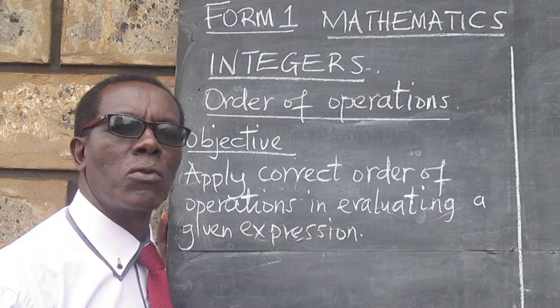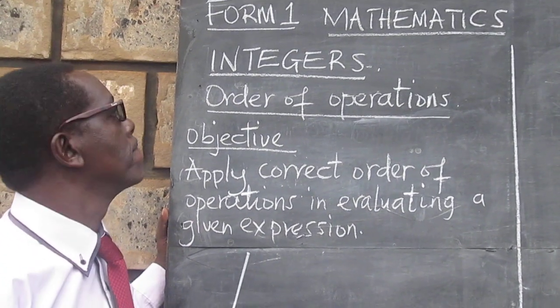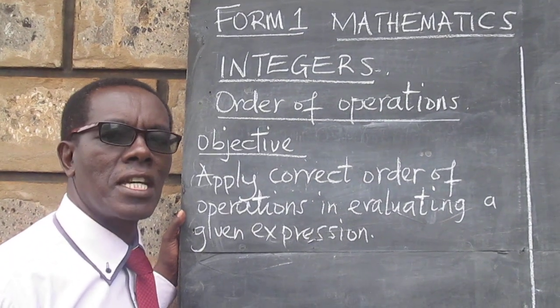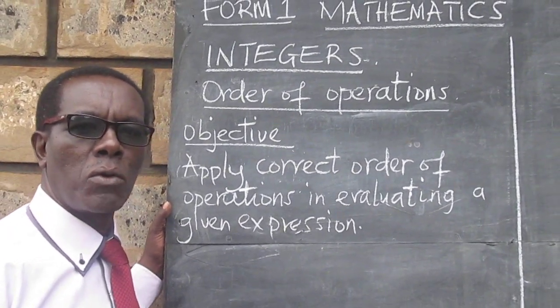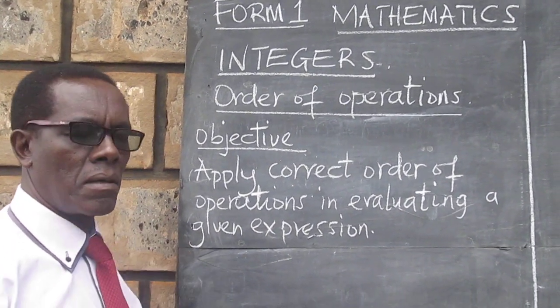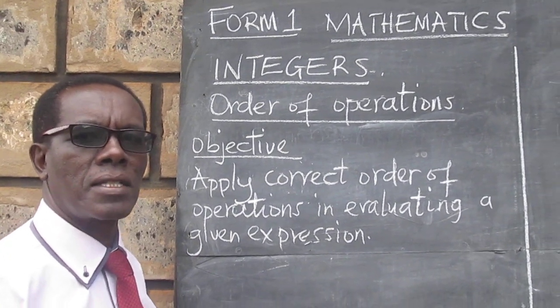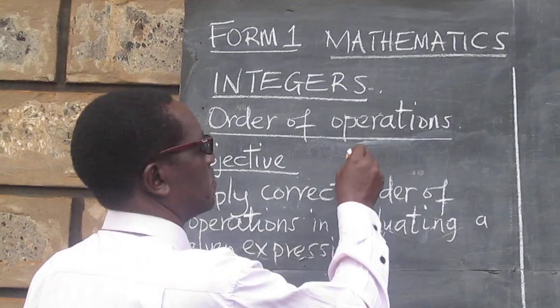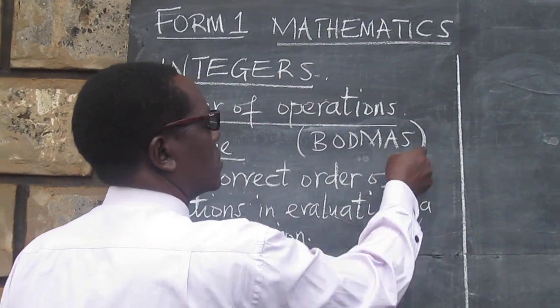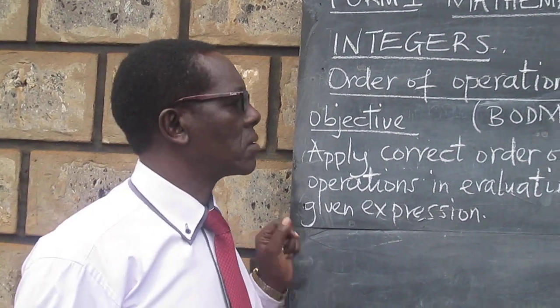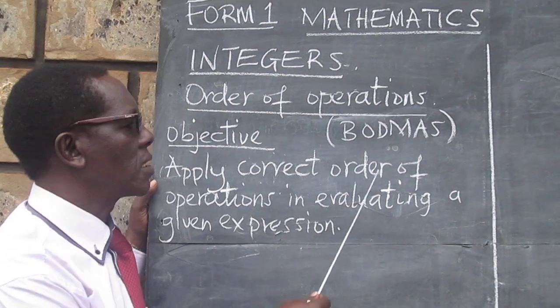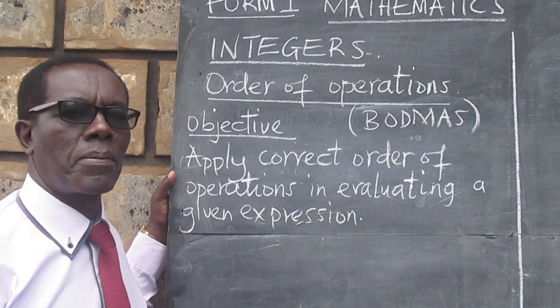In our lesson today we would like to look at a Form 1 topic in mathematics on integers, and specifically we want to look at the order of operations. In primary school this is sometimes referred to as BODMAS, which is a short form for brackets, of, division, multiplication, addition and subtraction.